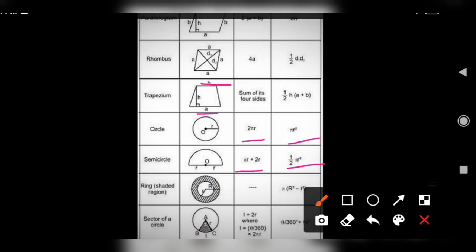And the next one is the pathway, pathway of the ring. Pathway of the ring is π into outer ring radius capital R minus smaller radius small r. So π into capital R² minus small r².